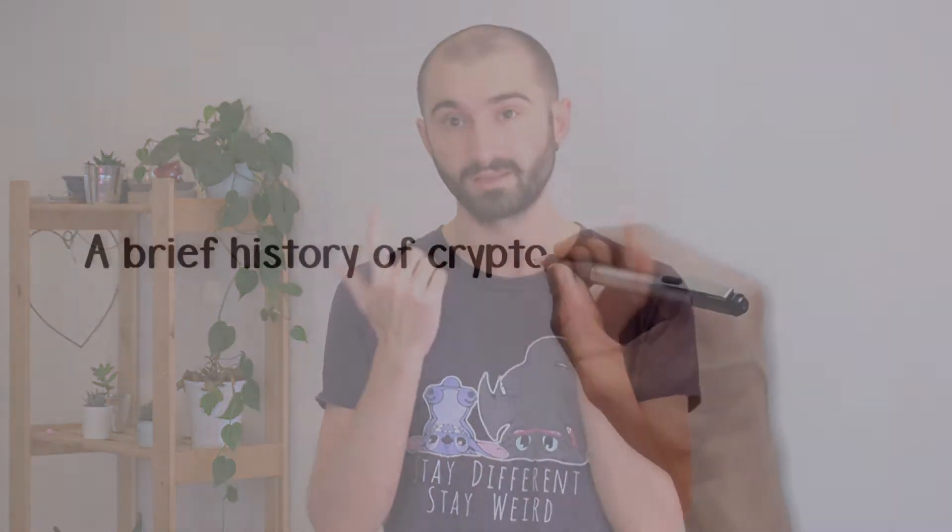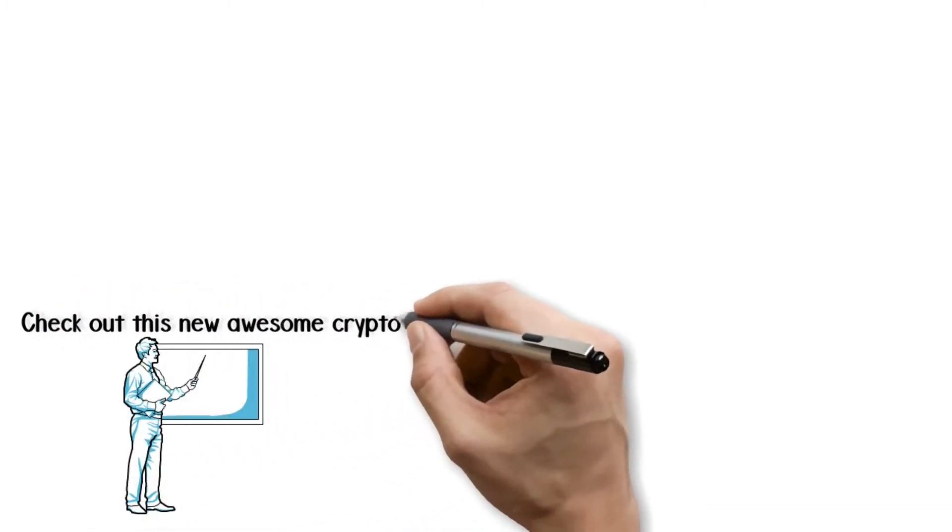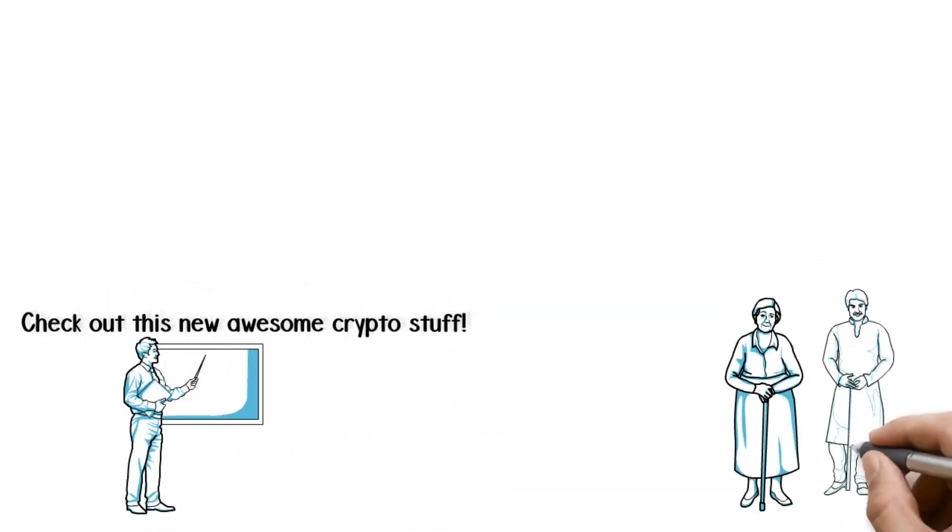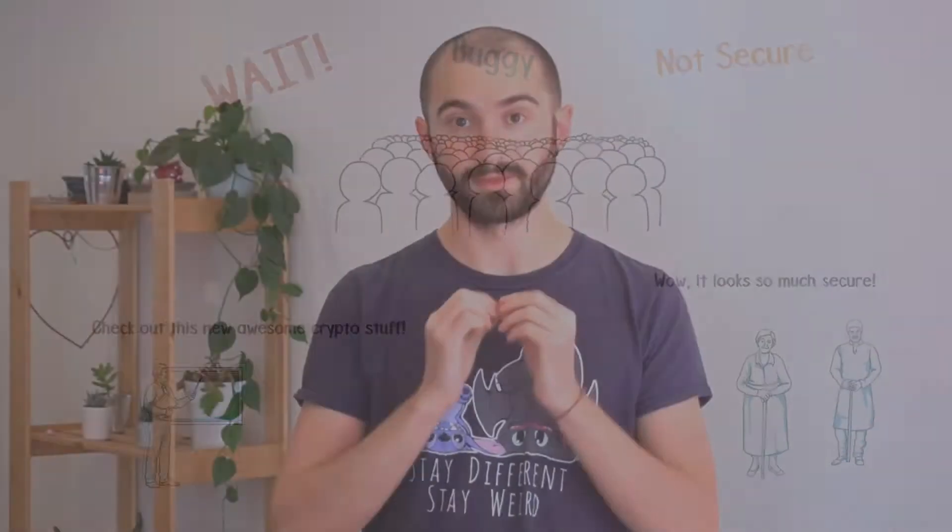How did crypto work back in the days? Some smart-looking people said they had a new cool crypto system. Other smart-looking people would look at it and then say, yeah, it's definitely secure. And then other people would break it.